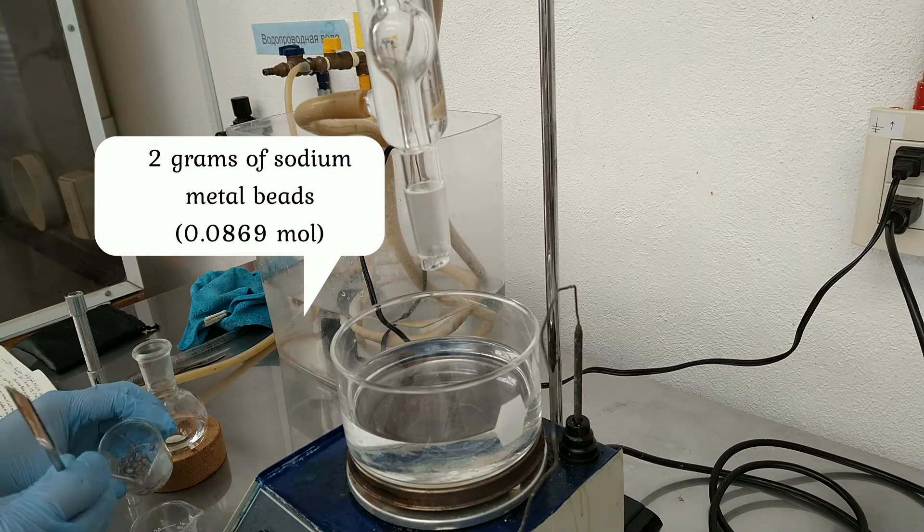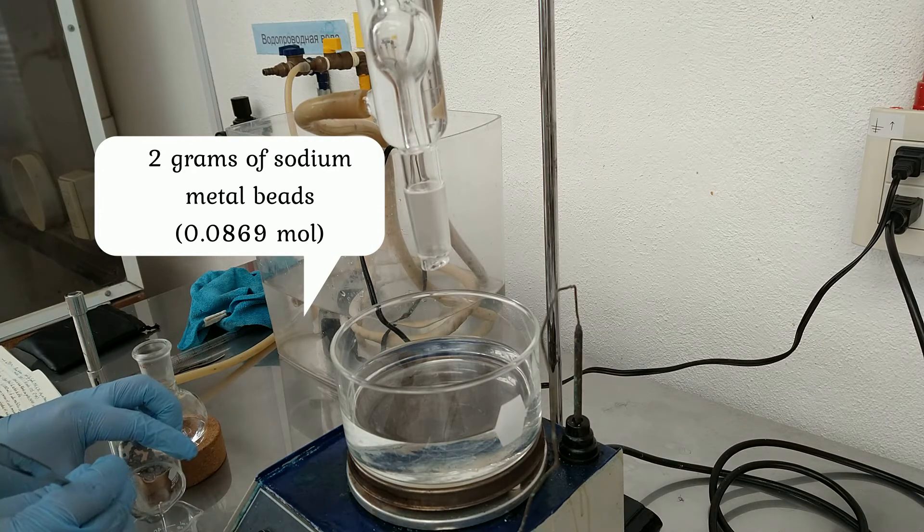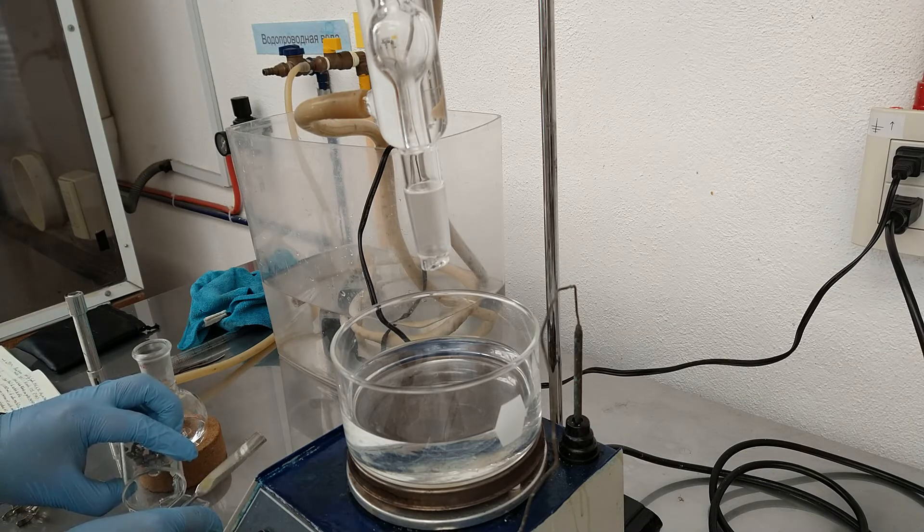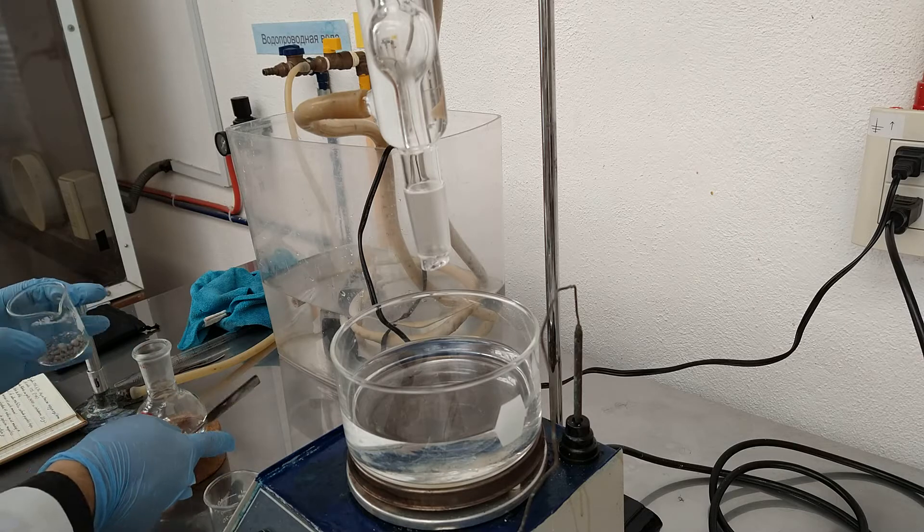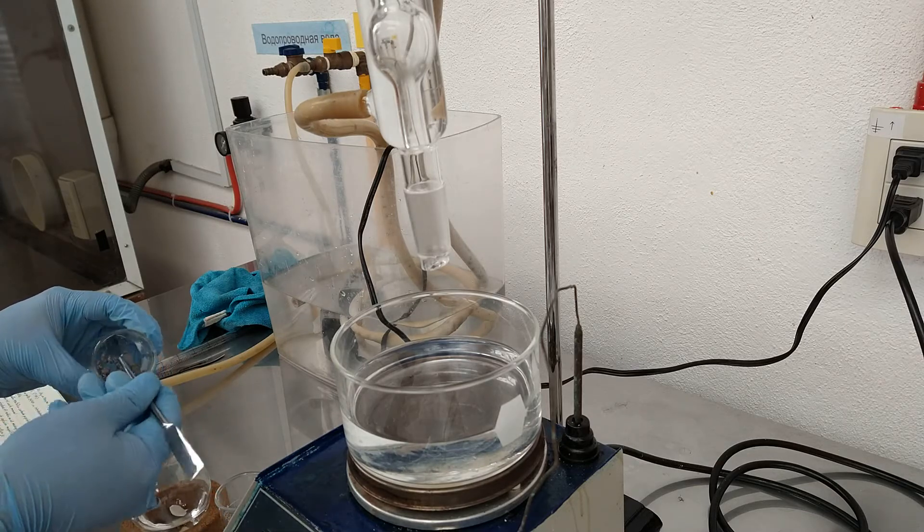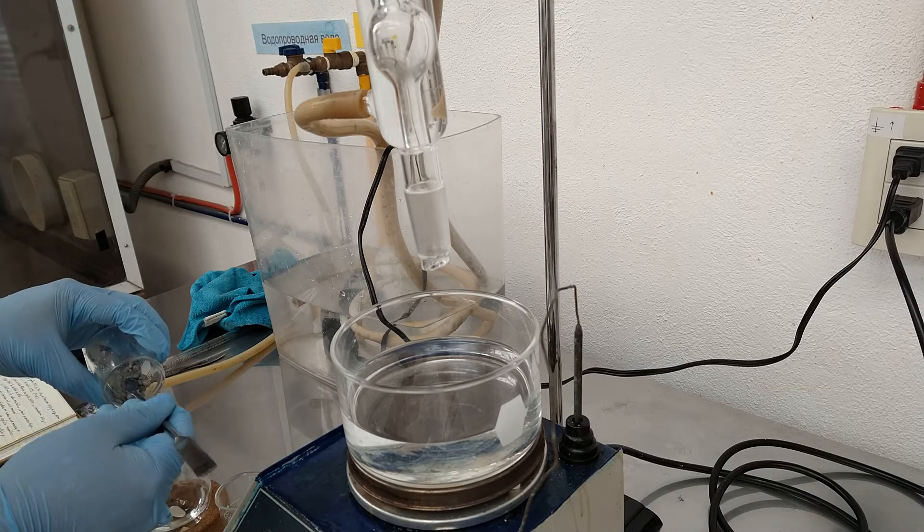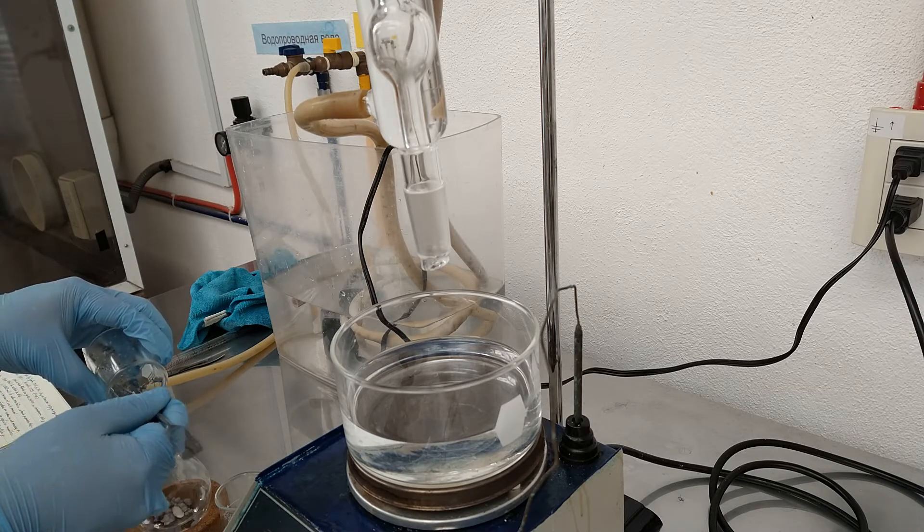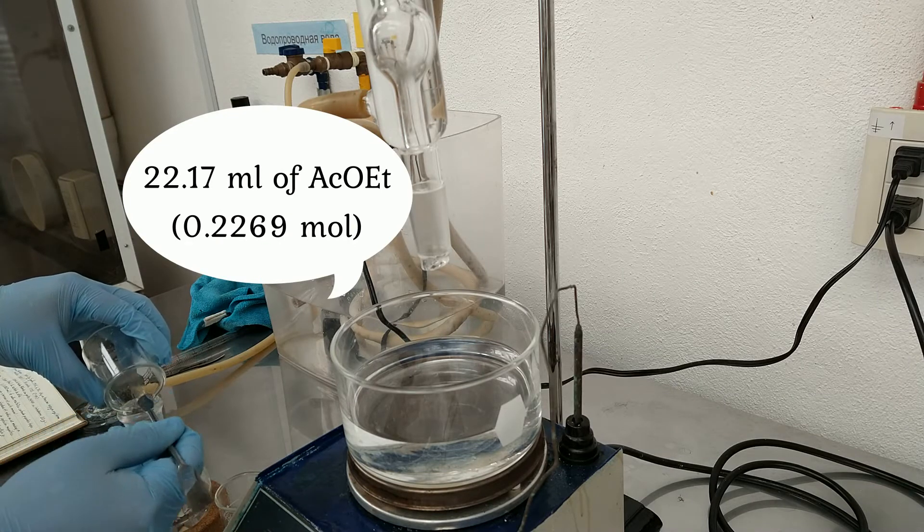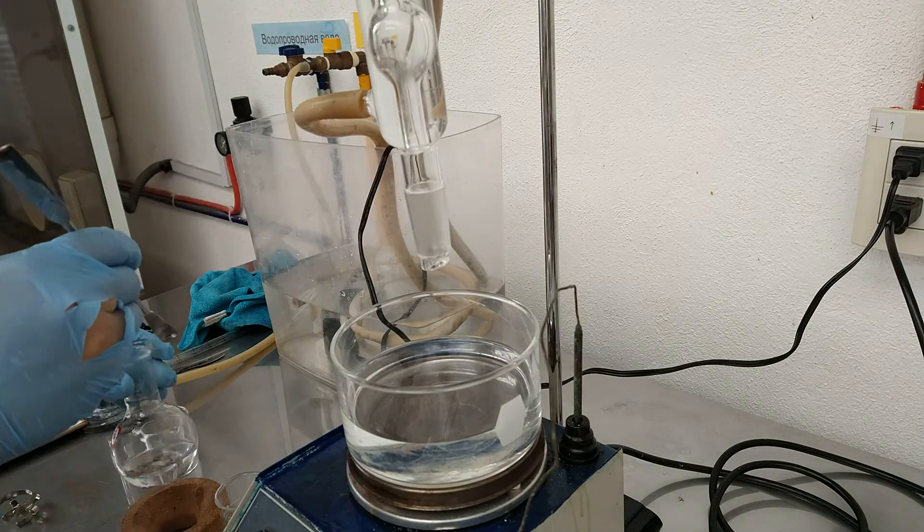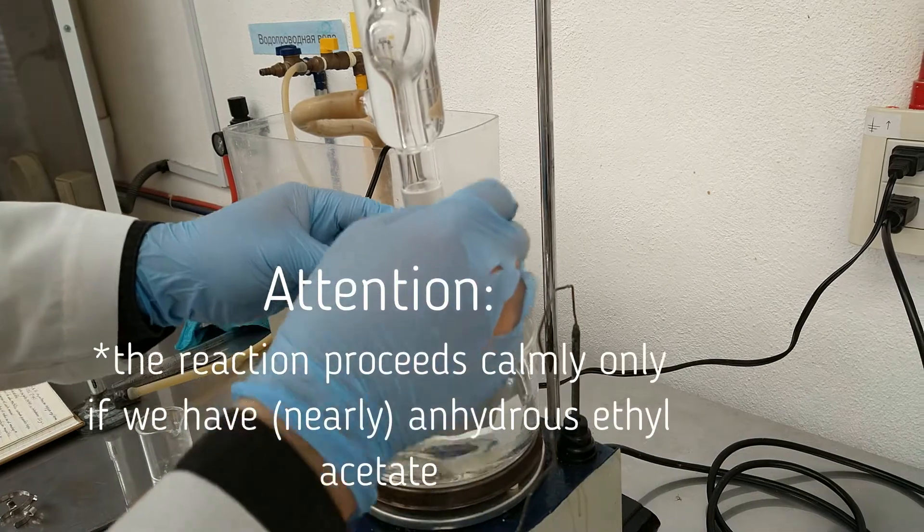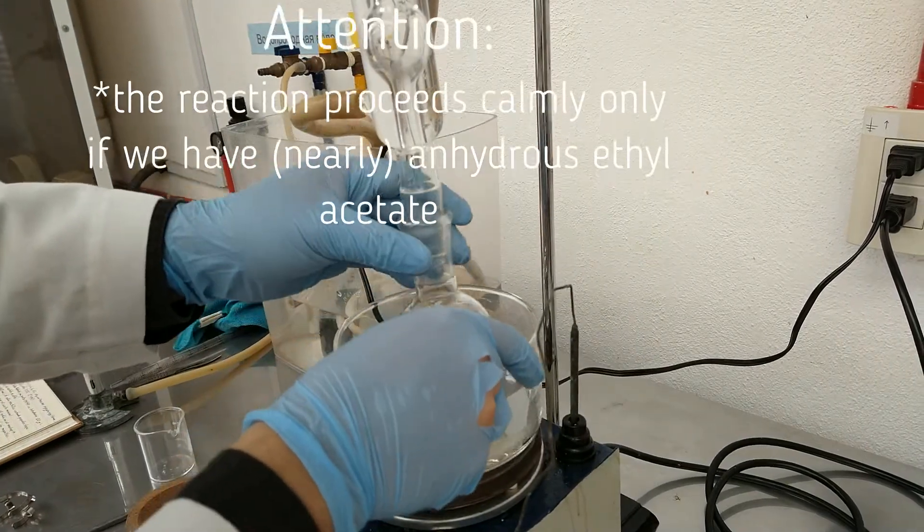Now we have here our sodium metal beads in some hexanes to remove the excess mineral oil. We have 2 grams of sodium beads and then we have to add them very quickly to our 22.17 milliliters of ethyl acetate. We don't have to worry about immediate reaction. As soon as this is done with the stirring bar inside the flask, we can now adapt it to the condenser.